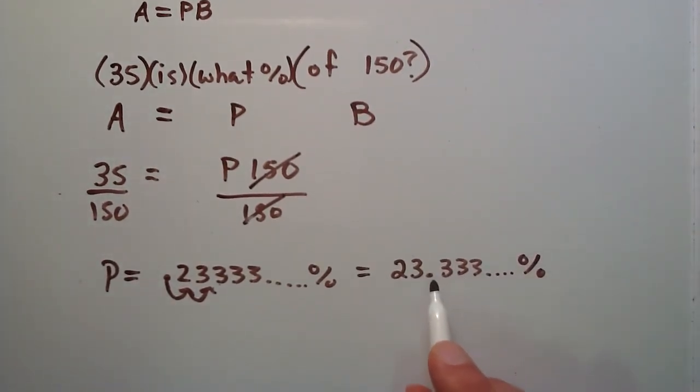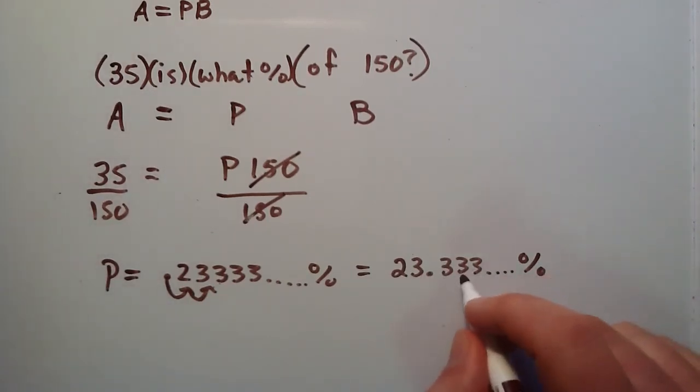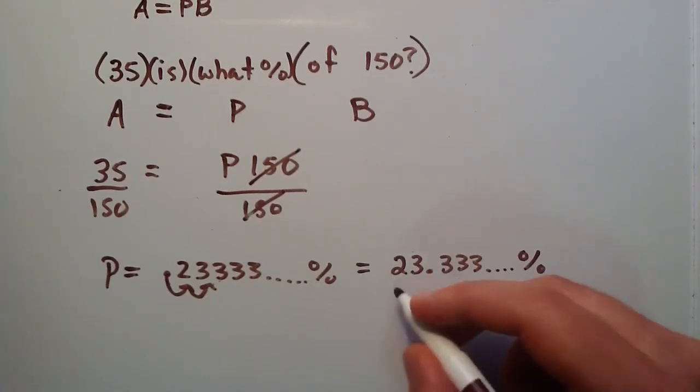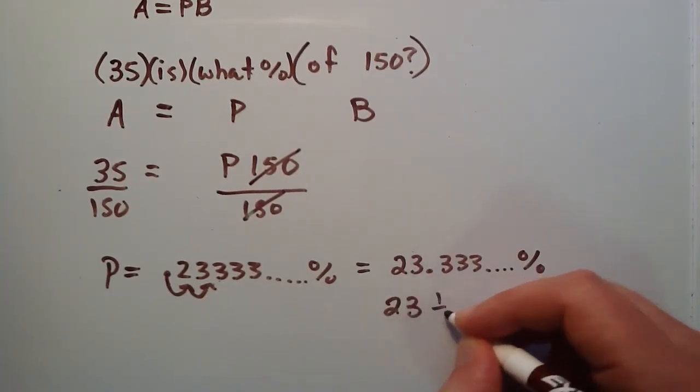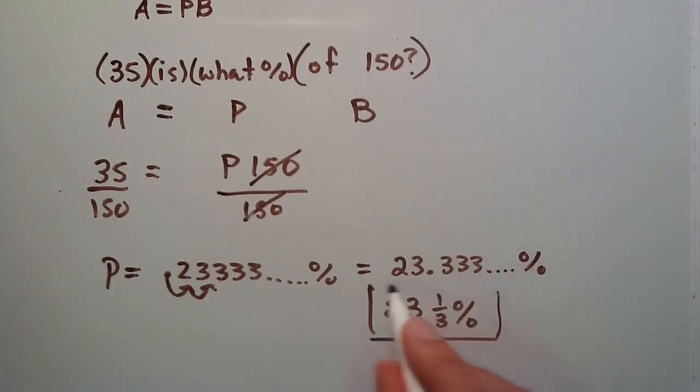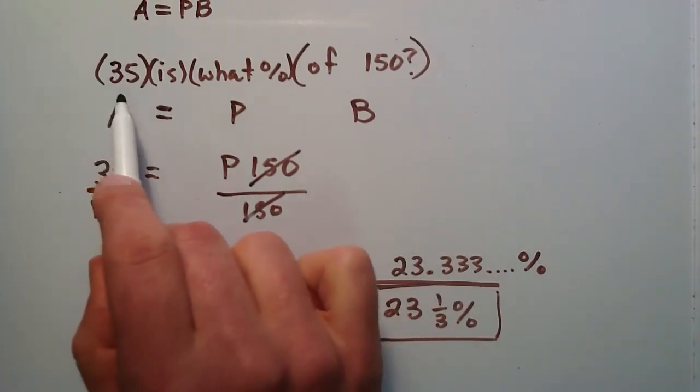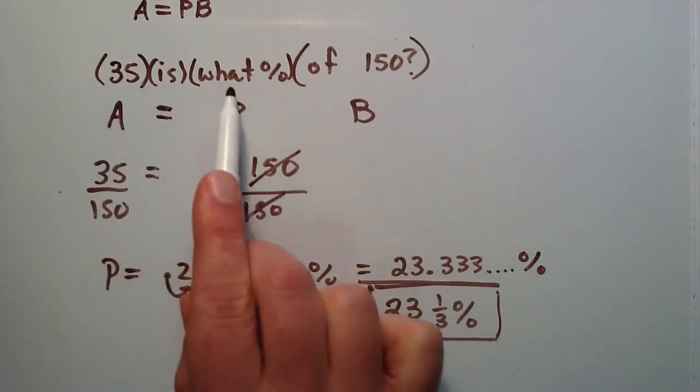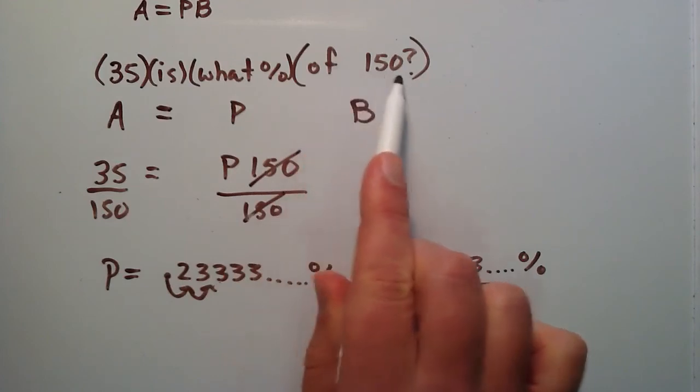Anytime you see a decimal point with all these 3's trailing, and the 3's keep repeating and never stop, that's the same thing as 1 third. So we can rewrite this as 23 and 1 third. That's our answer. 35 is 23 and 1 third percent of 150.